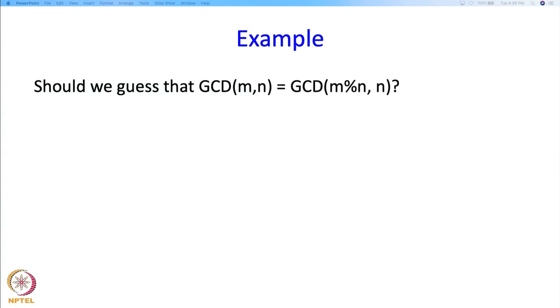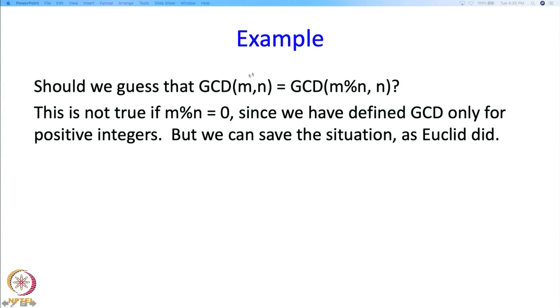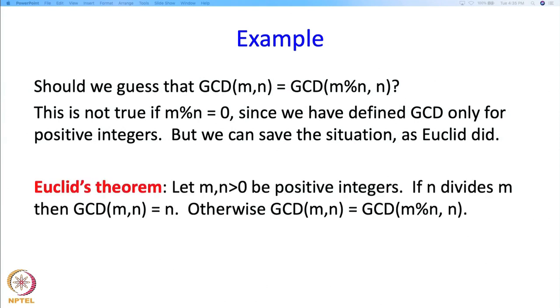So does that mean that GCD of m and n is GCD of m mod n and n? Well, we have to be a little careful because if m mod n is 0 and since we have defined GCD only for positive integers, then we cannot write this. But we could say that look, let us define GCD for 0 as well or we could do something less dramatic and we could say maybe like what presumably Euclid did.